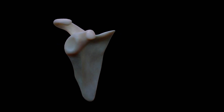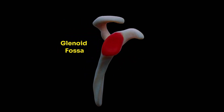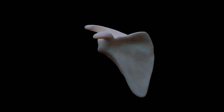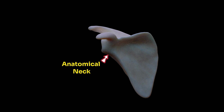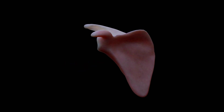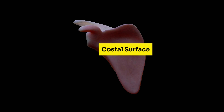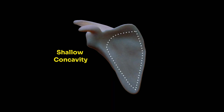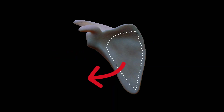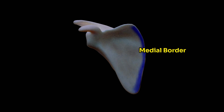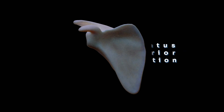The lateral angle also has a pear-shaped glenoid fossa which corresponds to the head of the scapula. The constricted part medial to this glenoid cavity is the anatomical neck of the scapula. The costal surface has a shallow concavity directed forwards and laterally, and the majority of the medial border of the costal surface receives the insertion of the serratus anterior muscle.